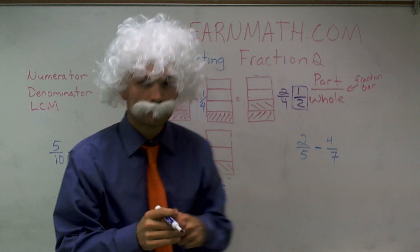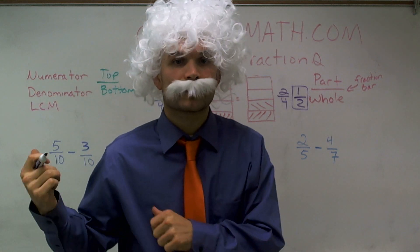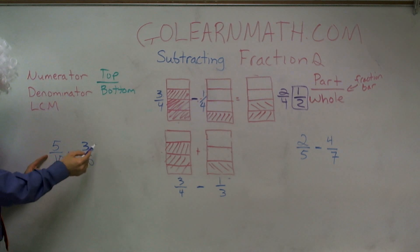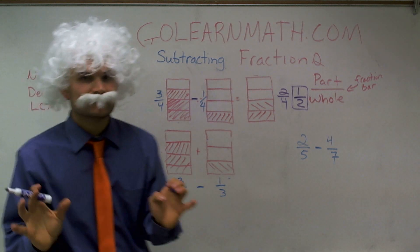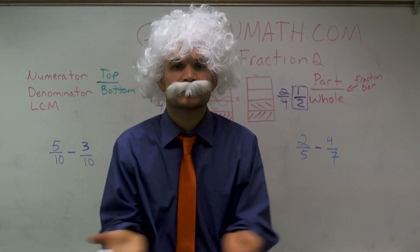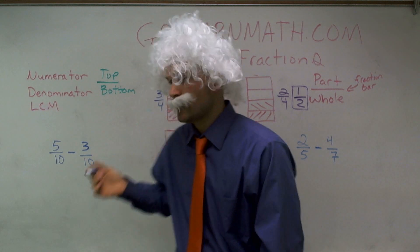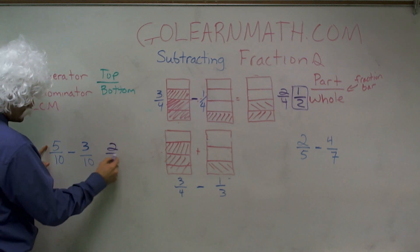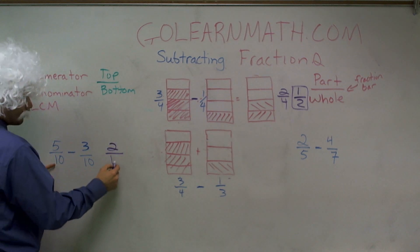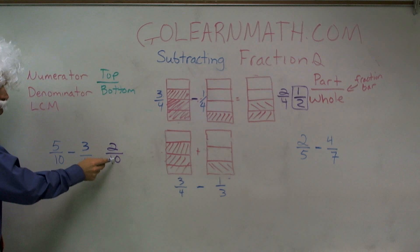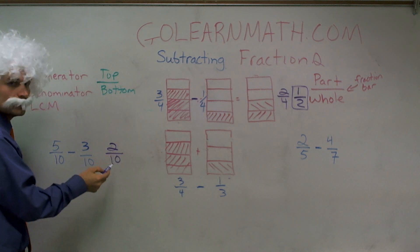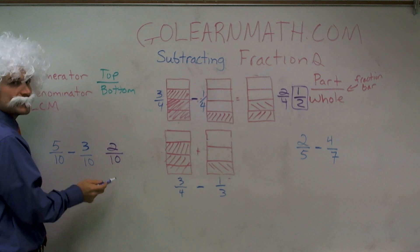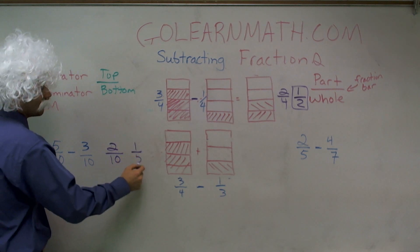Now, let's go ahead and work on some extra problems. So the first one, we have 5 tenths minus 3 tenths. When you're subtracting fractions, we have to make sure that our denominators are the same. And what we're going to do is just simply subtract the numerators. So 5 minus 3 is 2 over 10 parts. Therefore, now I can reduce this again. 2 is a common denominator for both of these. So I can divide the top and bottom by 2 to receive 1 fifth.